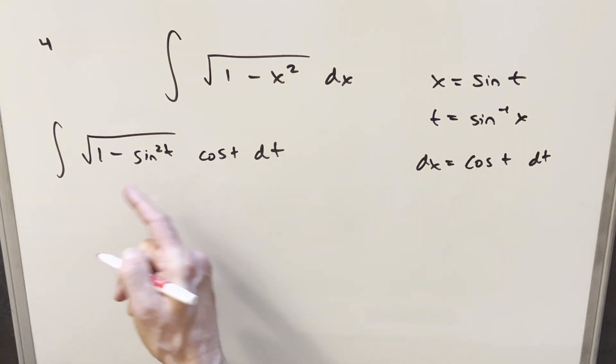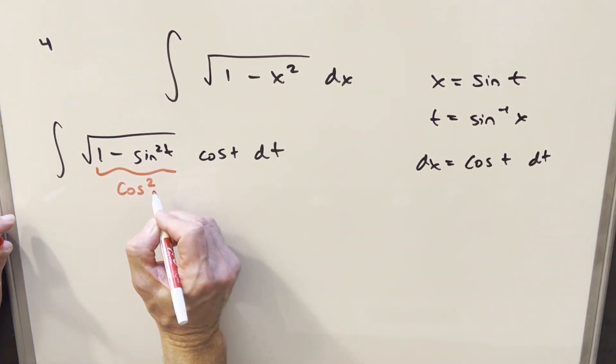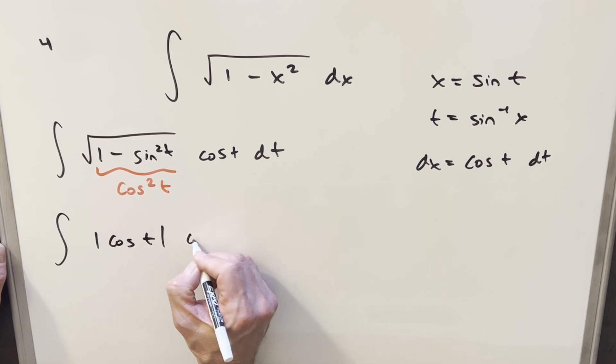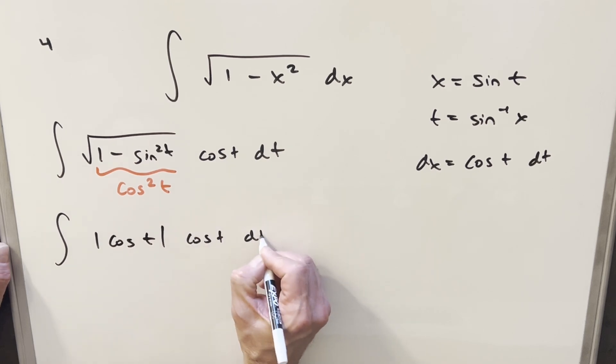But we have the identity for 1 minus sine squared t. We can write this as cosine squared of t. But we're inside the square root, so taking the square root of cosine squared t, I think I will actually leave, because technically we need absolute value on this. We'll have absolute value cosine of t times cosine of t dt.